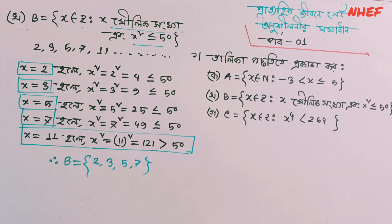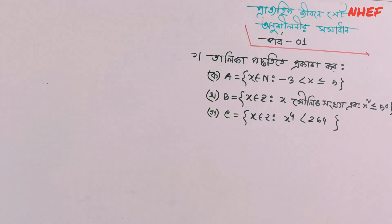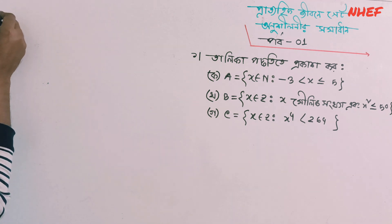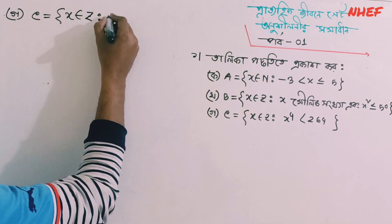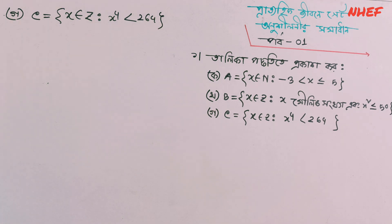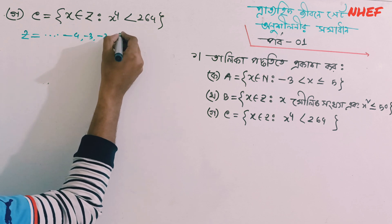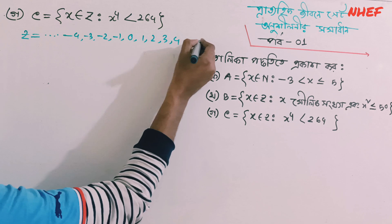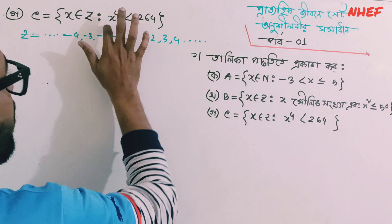Now you will find the next number. C is equal to x belongs to Z, x to the power 4 less than 264. This is very interesting mathematics. x belongs to Z. Z is equal to: minus 3, minus 2, minus 1, 0, 1, 2, 3, 4. Use x to the power 4.